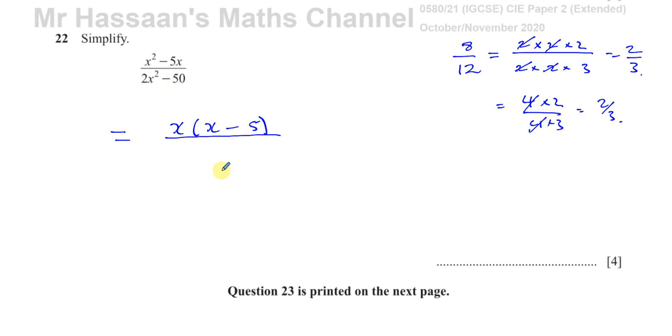When you factorize the denominator, first of all you see there's a common factor of 2. So you take out that 2 and you're left with x squared minus 25. Now some people might get stuck here and think, oh hold on, nothing cancels out and they might say it can't be simplified. However,